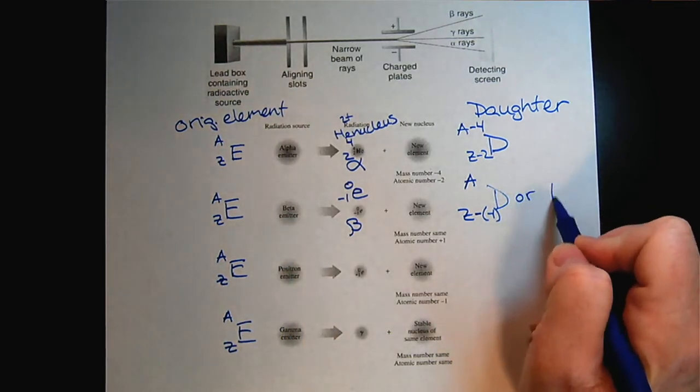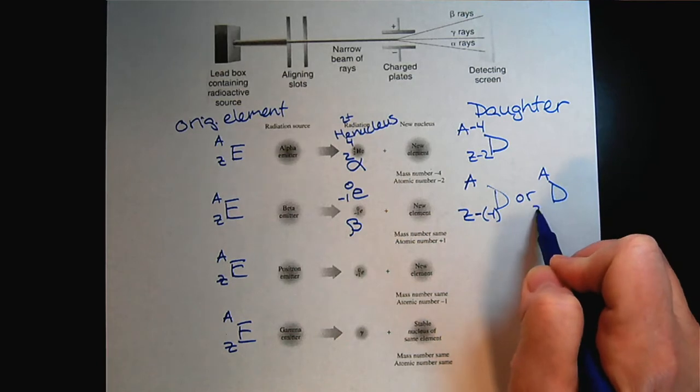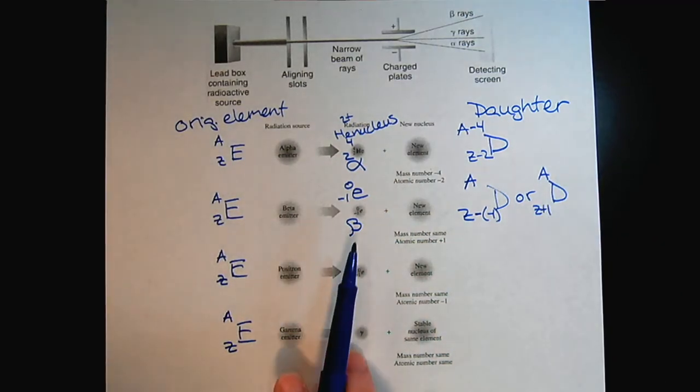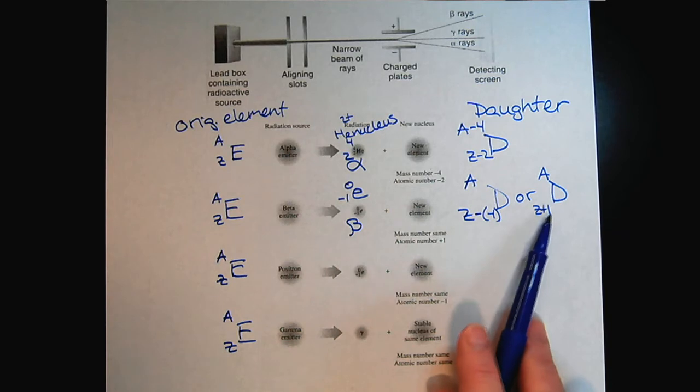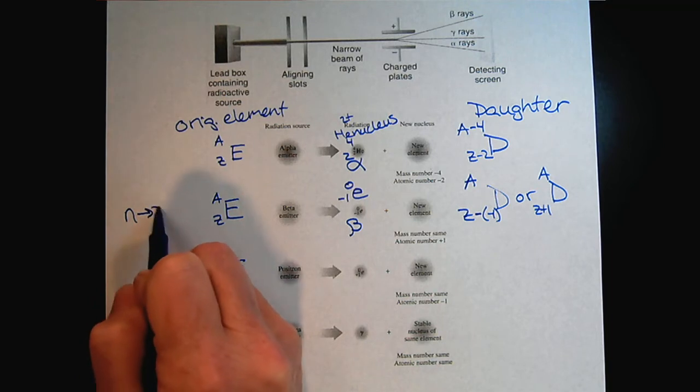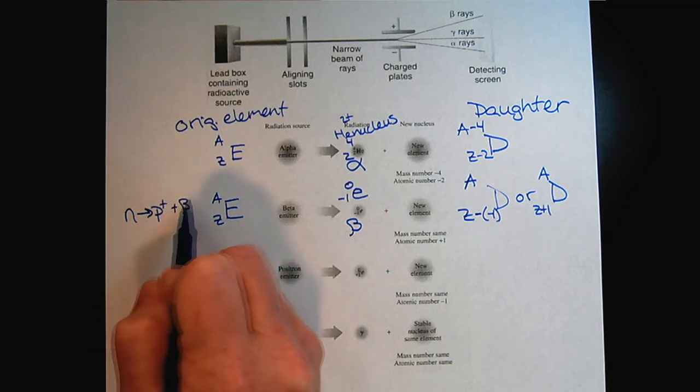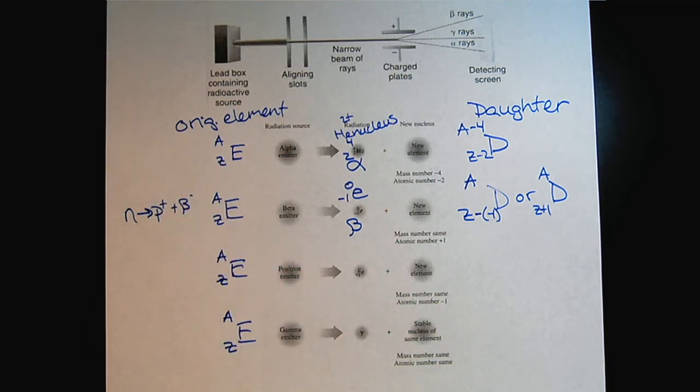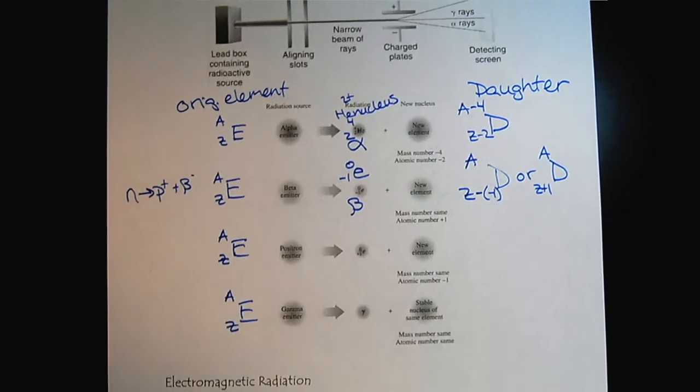And so we could rewrite this, simplifying. So basically what happens here is that the nucleus gained a proton. So here we have a neutron becoming a proton plus a beta particle. I guess I'll give you that right now.